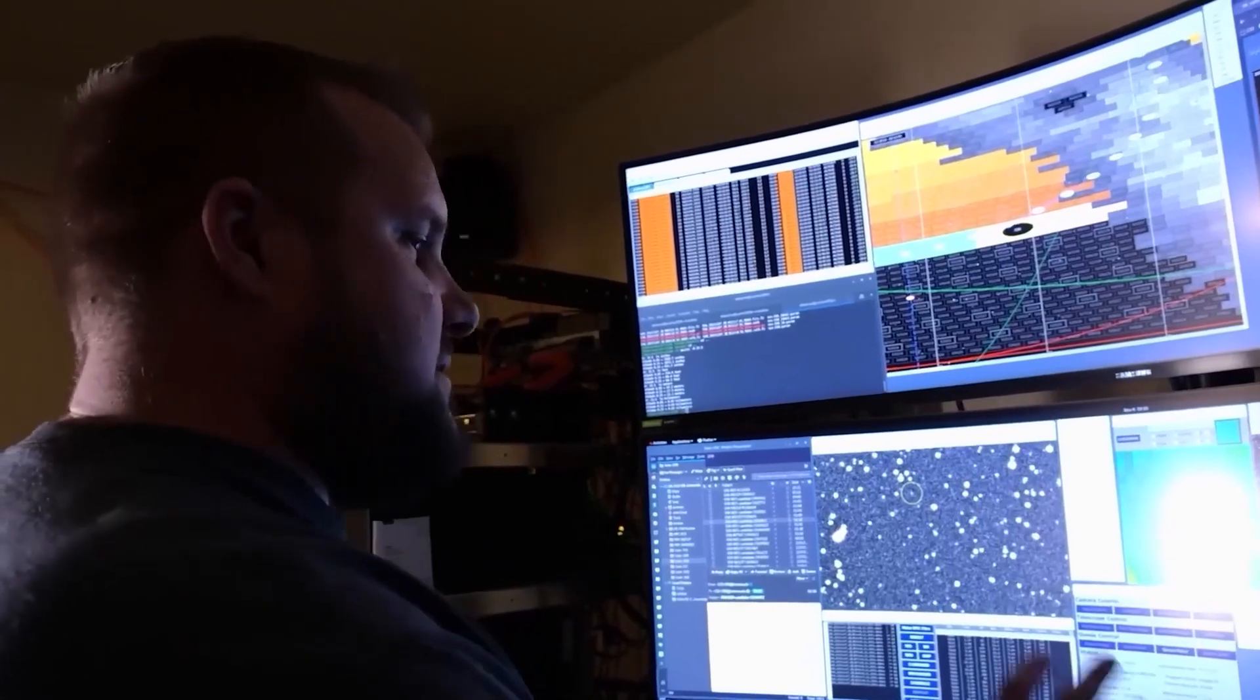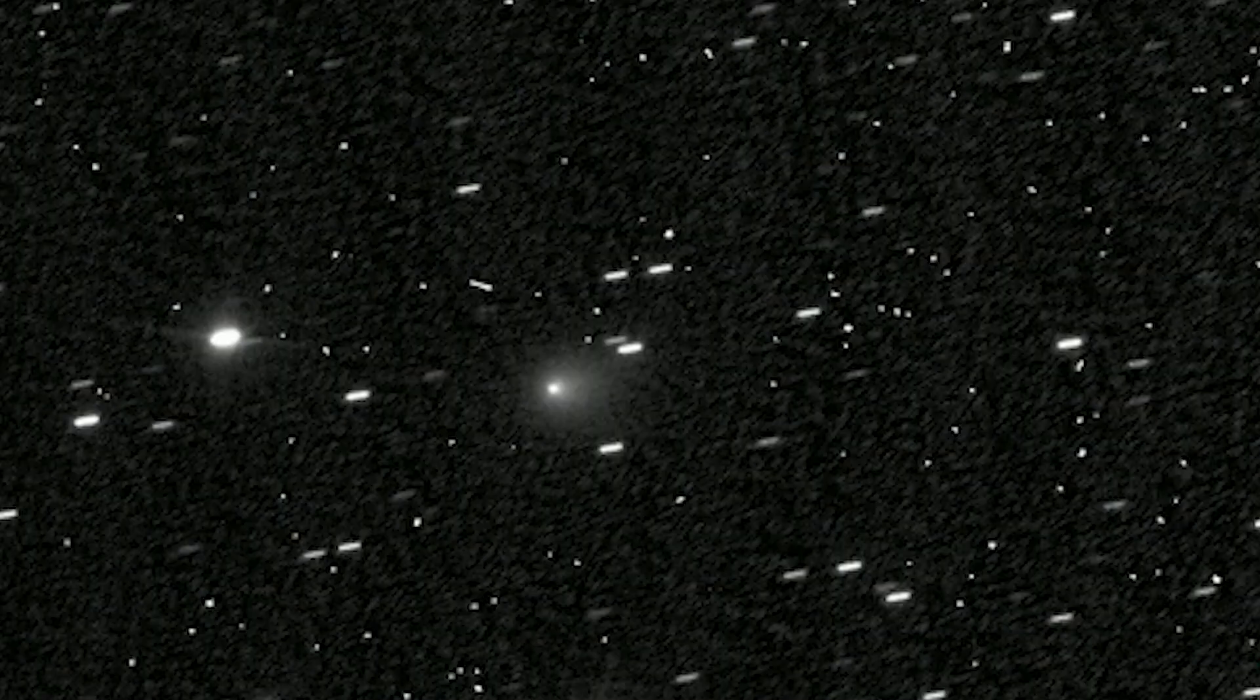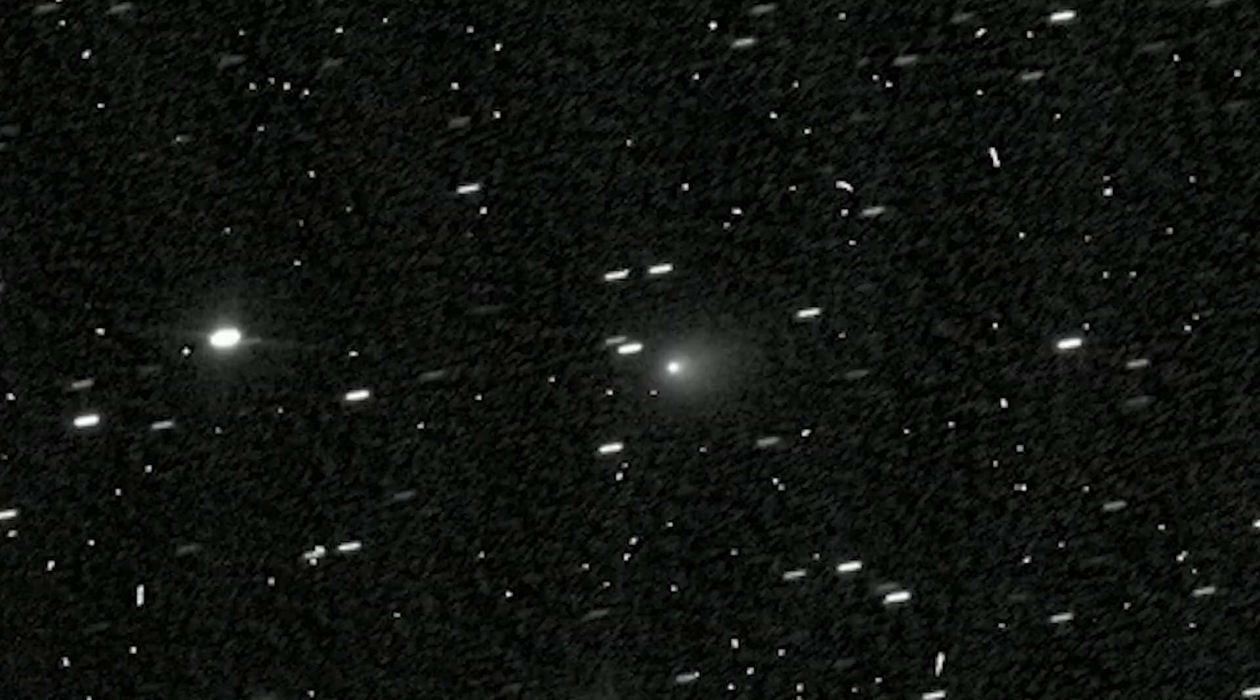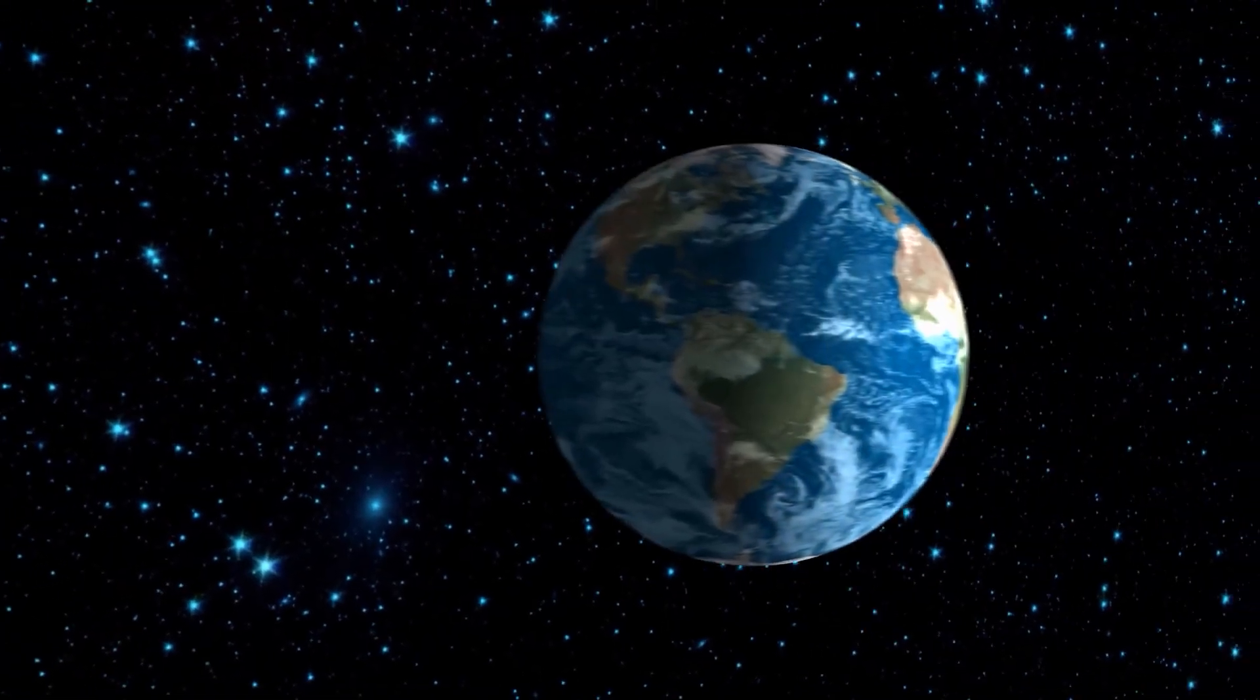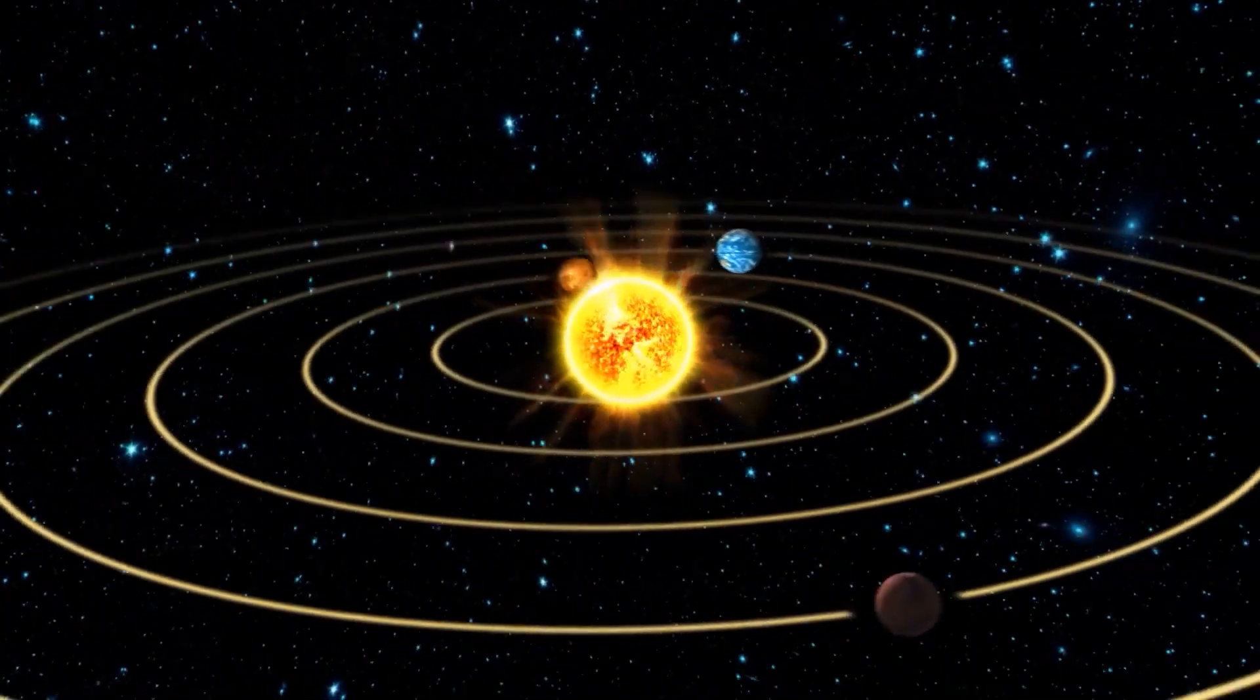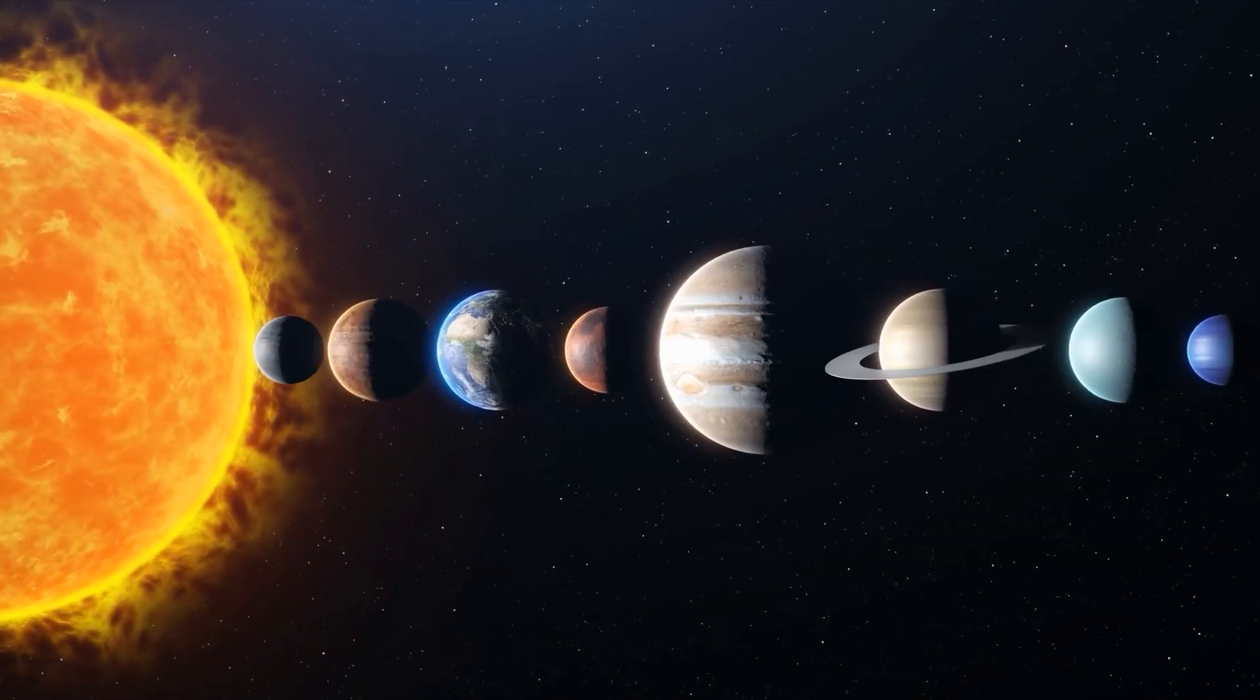This is where the plot thickens, and the whispers begin. Consider the orbital eccentricity of 3I Atlas, an astounding 6.141. To give you some context, orbits bound by a star, like those of our planets, have an eccentricity less than 1. The more stretched out an orbit is, the higher its eccentricity, but typically still below 1 for bound objects.